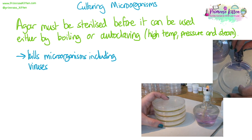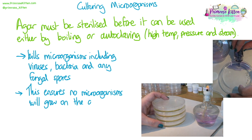Agar must be sterilized before it can be used. We either do that by boiling — heating to a boiling temperature — or we autoclave it. Using an autoclave involves high temperature, pressure, and steam to sterilize and kill any microbes, including viruses, bacteria, and any fungal spores that could be present. This ensures that no microorganisms will grow on the agar other than any bacteria that we want to put on to grow. This is really important because if there is any contamination in an aseptic process, the whole lot has to be destroyed and you start again.